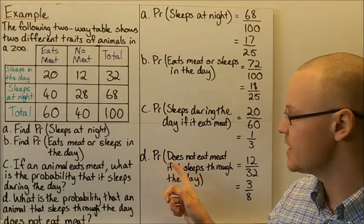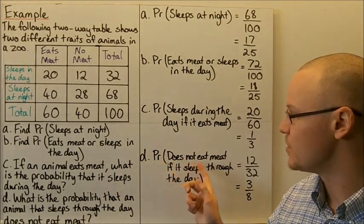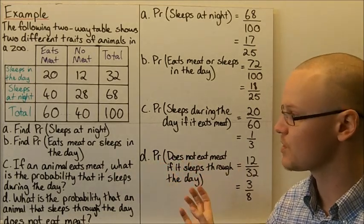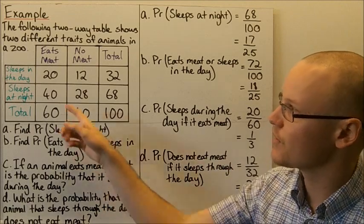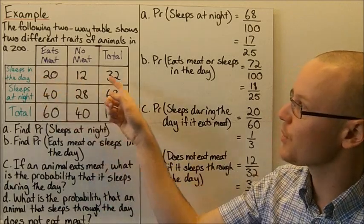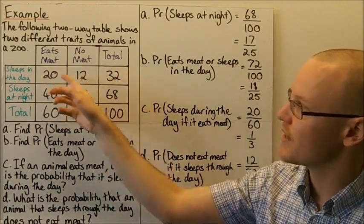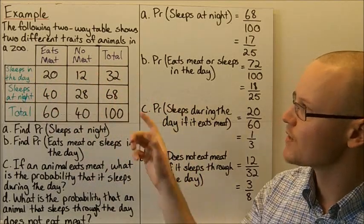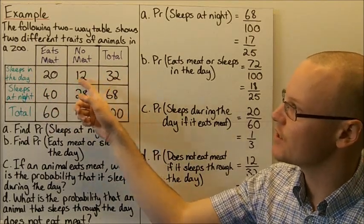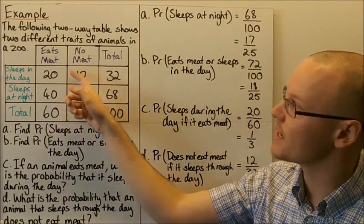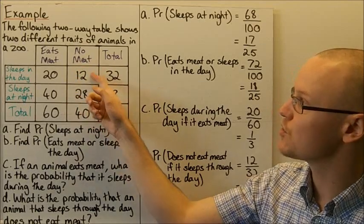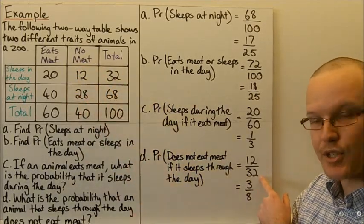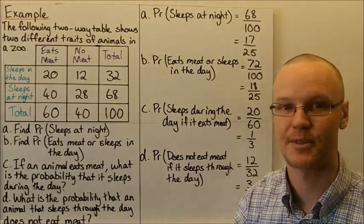Finally, the probability that an animal does not eat meat given that it sleeps through the day. All of the animals that sleep through the day total 32. The animals that don't eat meat among those that sleep through the day is 12. So it's 12 out of 32, which is three-eighths.